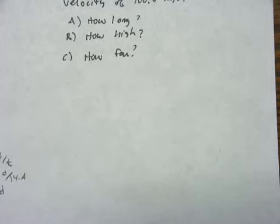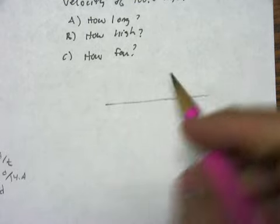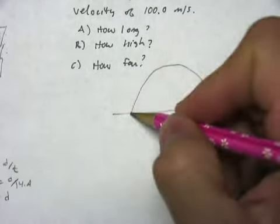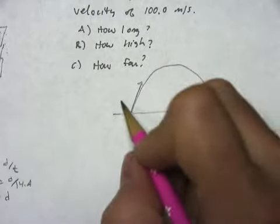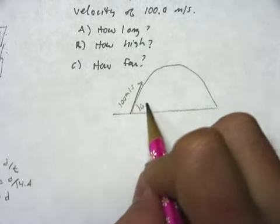Okay, number two says you launch a ball at 60 degrees on level ground with a muzzle velocity of 100 meters. So 60 degrees looks more like this with a muzzle velocity of 100 meters per second at an angle of 60 degrees.